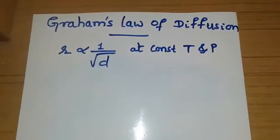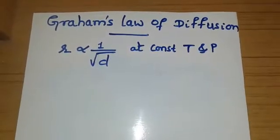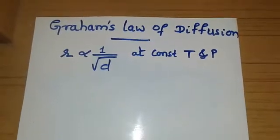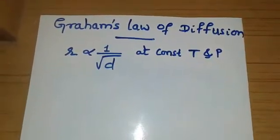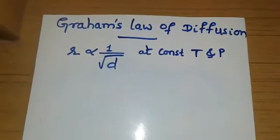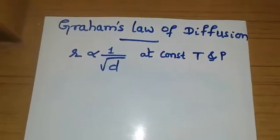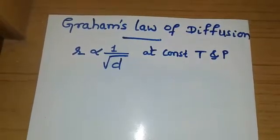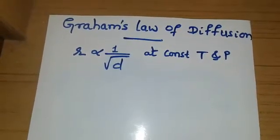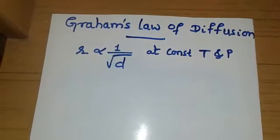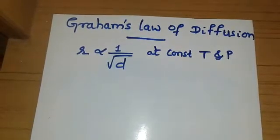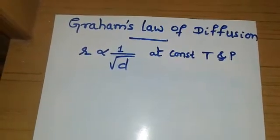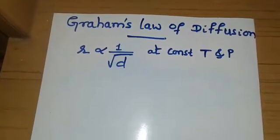Dear friends, today I am going to demonstrate Graham's Law of Diffusion. Graham's Law of Diffusion was formulated by Scottish chemist Thomas Graham in the year 1848.